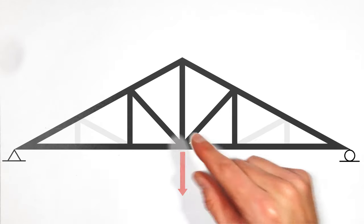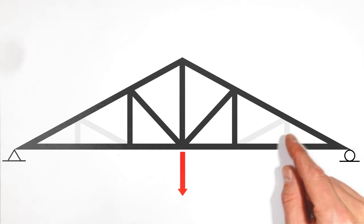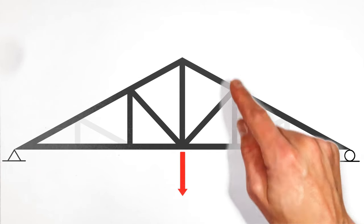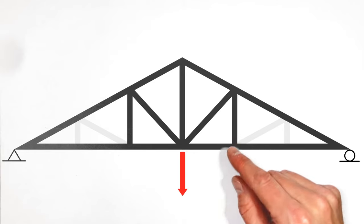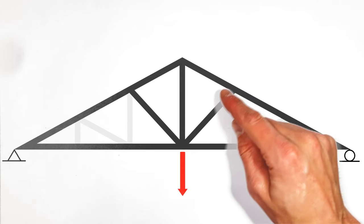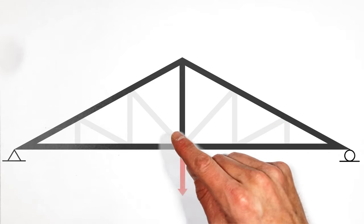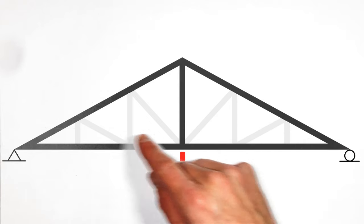And at least on this truss, there's a bit of a cascading effect. Once we treat these two beams as though they're not there, this beam becomes a zero-load member, which in turn means so does this one, leaving us with a nice, simple five-member truss.